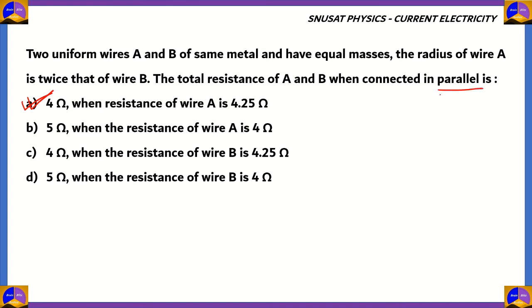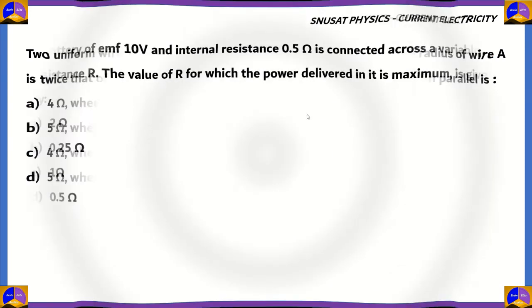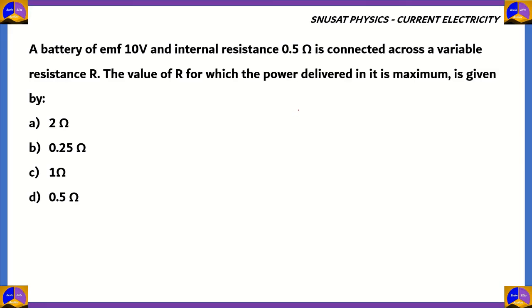So the correct option is option A: 4 ohms when the resistance of wire A is 4.25 ohms. Remember, these wires are connected in parallel, so the equivalent resistance cannot be greater than the individual resistances — that's why B and D are incorrect. And since we got the equivalent resistance as a term of wire A, option C also turns out to be incorrect. Now let's look at another physics question.